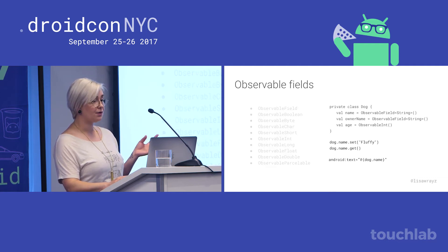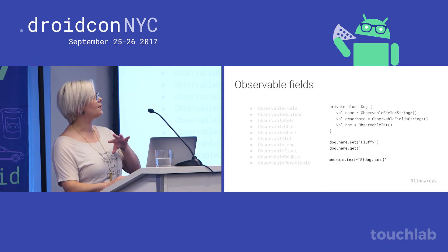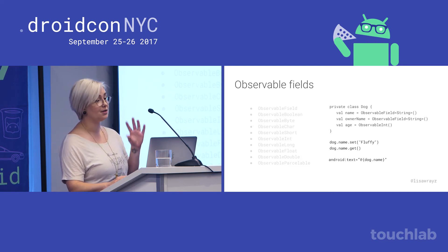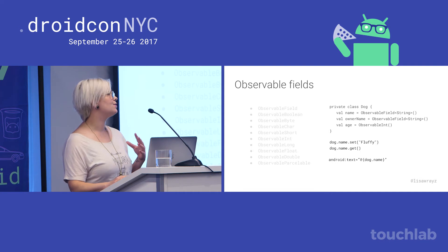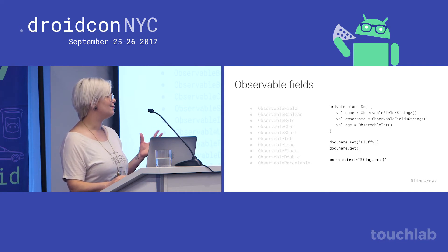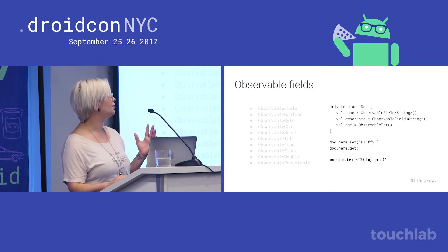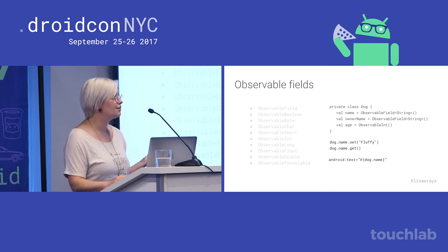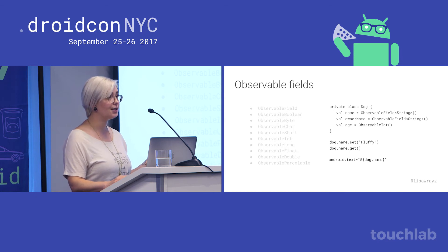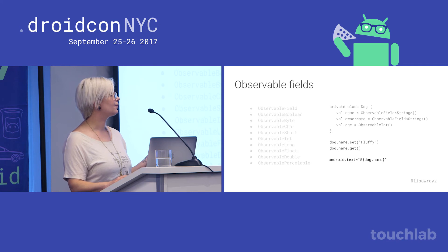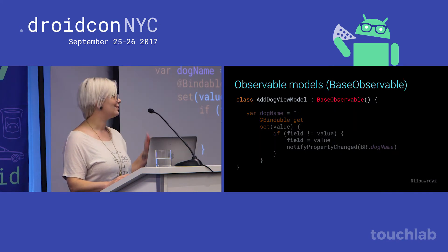Here are some observable fields. I don't personally use these very often, but they're great for one-offs or when you're just starting to convert a data class, or if you just have a couple of fields. You use them by substituting observable fields for the original types in your model, and you set them by using the getter and setter methods. Unfortunately in Kotlin this is still a bit verbose. The good thing is that nothing changes in your XML.